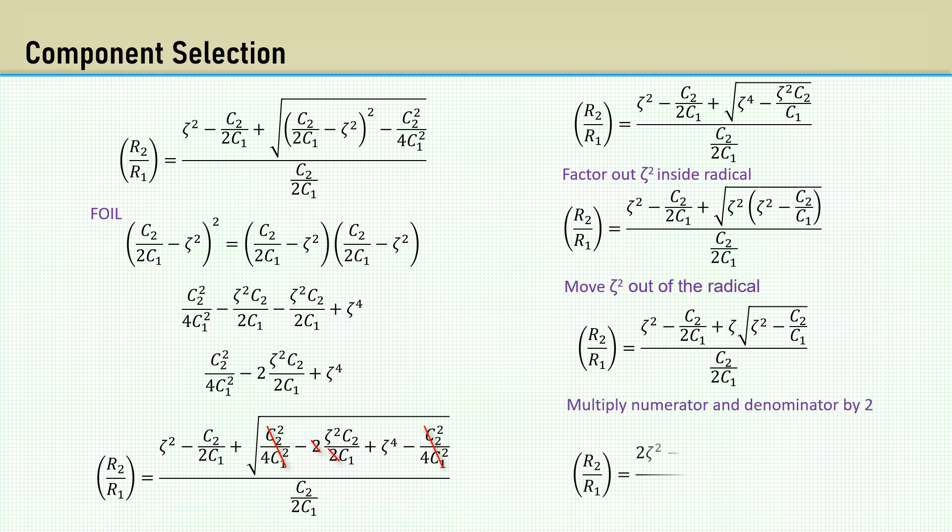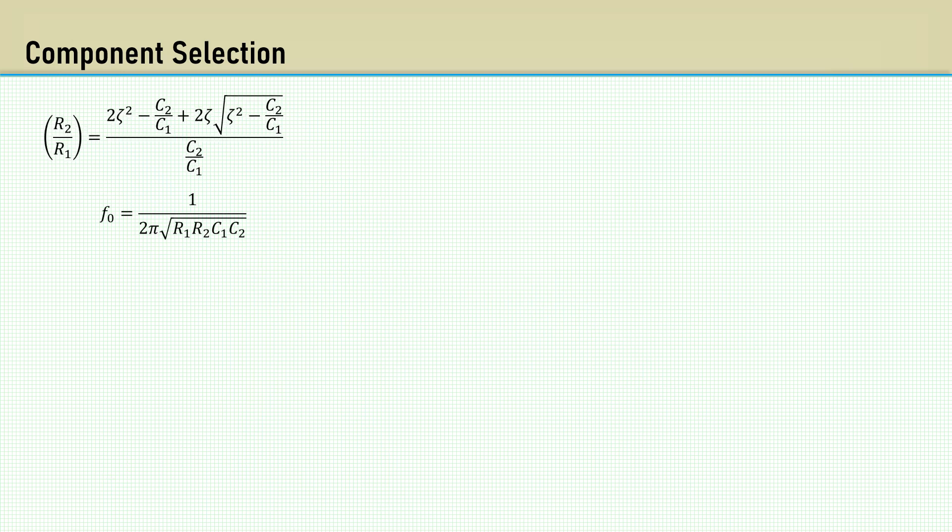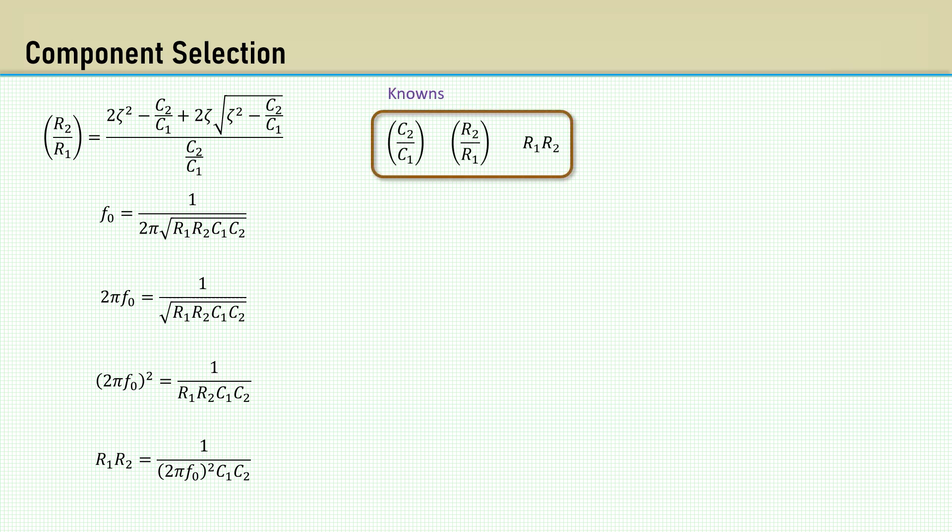Factor out zeta squared inside the radical and move zeta squared out of the radical. And finally, multiply numerator and denominator by 2. At this point, we only know ratios. We can rearrange the frequency equation to solve for the product of R1 and R2. Here are our knowns, but the value of R1 and R2 independently are unknown.